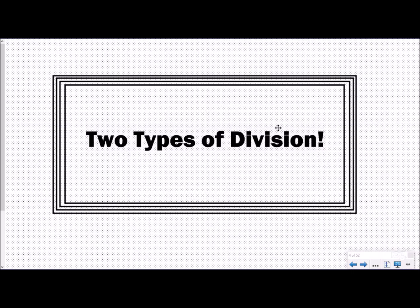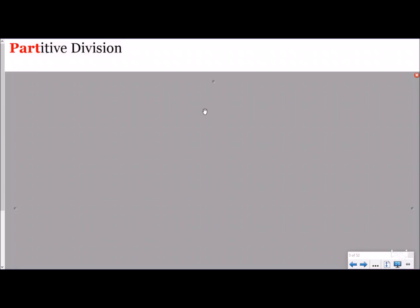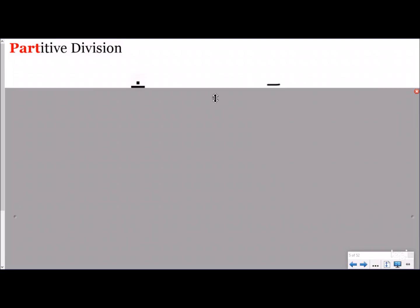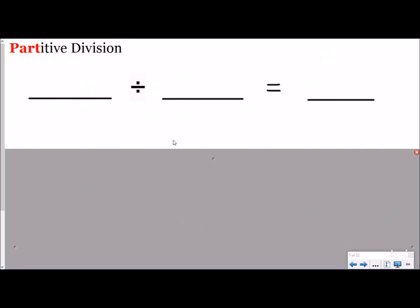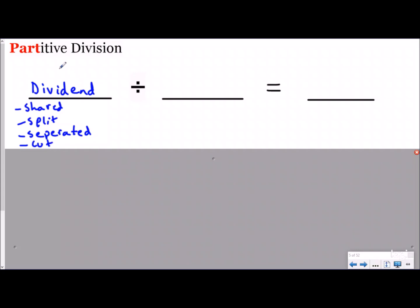You're taking something — in math, it's a number — and you're splitting it equally into groups. There are actually two types of division problems, and a lot of people don't really know this or think about it. Let's check out the first one. First type of division is partitive division. Here's our division equation. The first number is our dividend. No matter what type of division you're doing, the dividend is the first number. This is a number that's being shared, split, or separated.